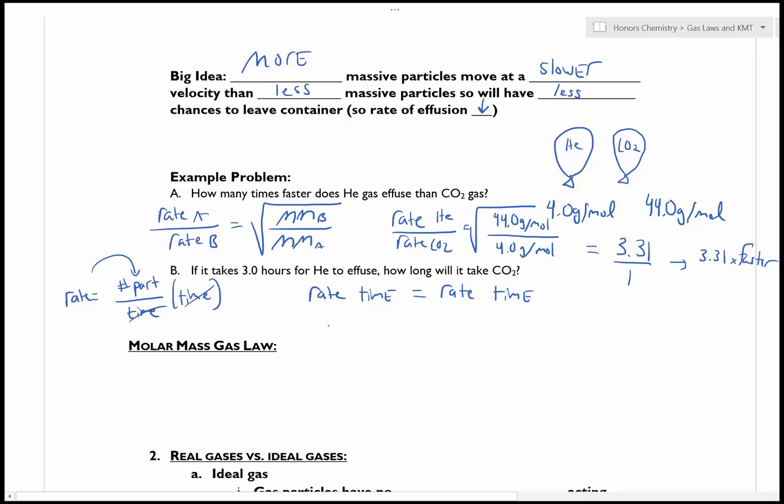So because of that, I can actually do a little ratio here. So my rate of He is 3.31 and it's going to be going for three hours. And then my carbon dioxide is one compared to 3.31 because it's 3.31 times faster. And we're trying to figure out how much time it's going to need to be. So, when I multiply 3.31 times three, I'm going to get x is equal to 9.93 hours.